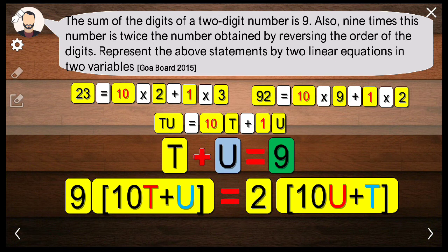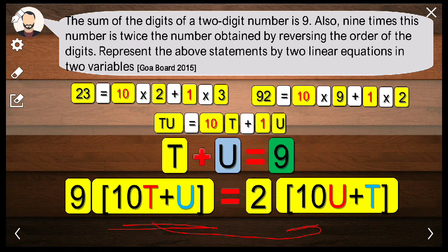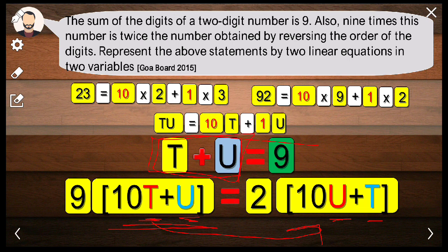What is written over here? 10T plus U. In this case, the only replacement that happens is instead of T, U is written, and instead of U, T is written. That is what we say by reversing the order of the digits. T and U are nothing but the digits, so I've just replaced them.